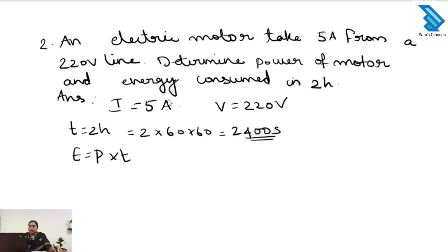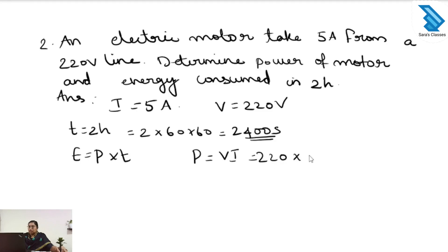The current is given and the voltage is given, so first we find the power. The equation to find the power is P equal to V into I. Substituting the values, V is 220 and current is 5. So the answer is 1100 watt. The power is 1100 watt.